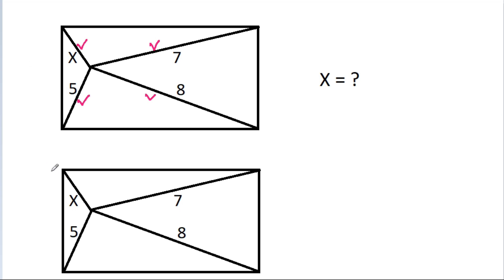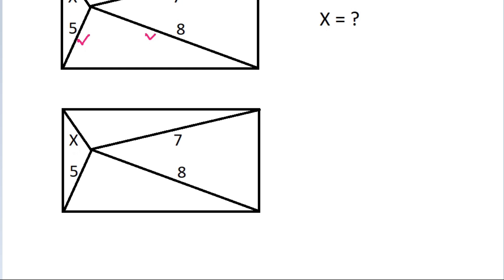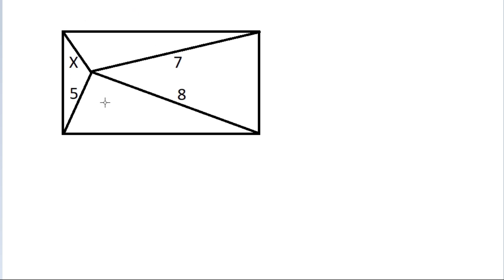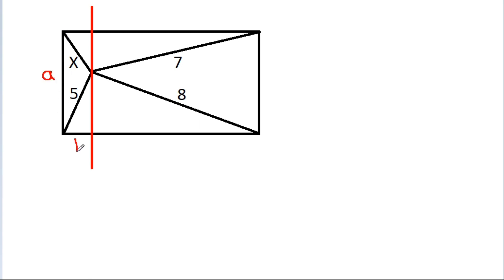So, I have copied the diagram and if we draw a vertical line from the intersection point. And suppose this segment is A, this segment is B, this segment is C, then this segment will be B and this segment will be C. And suppose this segment is D, then this segment will be A-D.